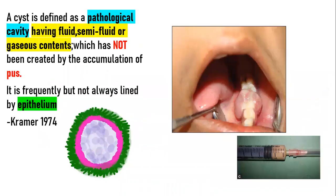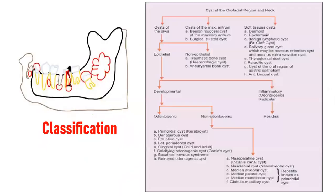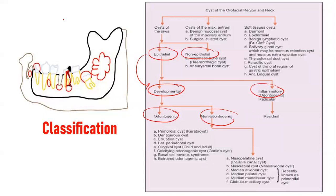Before we get into the OKC, a quick reminder: the cyst is defined as any pathological cavity which has some content. The content can be fluid or semi-fluid, and it is not pus. It can or cannot be lined by epithelium. Based on this, it is classified as true or pseudocyst, epithelial or non-epithelial cyst, further classified as developmental or inflammatory cyst, and further as odontogenic and non-odontogenic cyst.